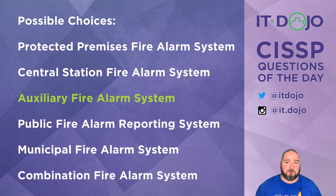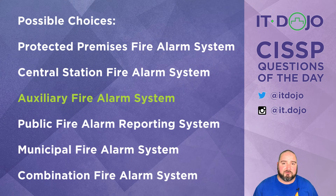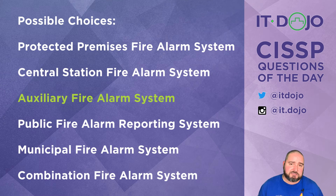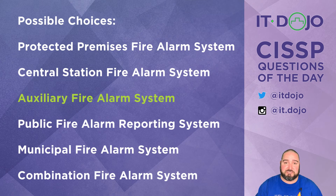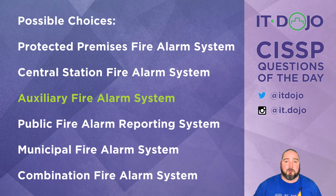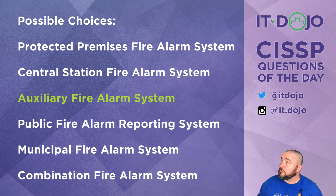The next two answers are largely similar. A public fire alarm system or municipal fire alarm system refers to the local fire alarm reporting already built into the city's infrastructure — we're looking to interface with that via an auxiliary fire alarm system, rather than it being the city's own system. The last option is a combined system, which is simply combining fire alarm systems with other systems like CCTV, burglary alarms, carbon monoxide detectors — all rolled together. For this question, auxiliary fire system is your best answer.